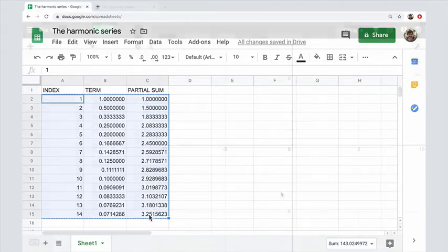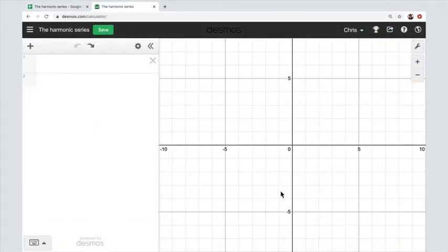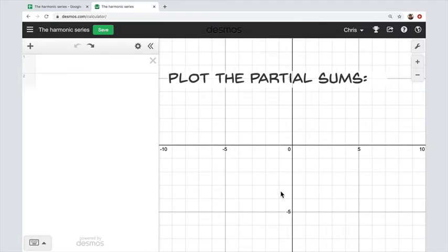So you copy that data and now you head over to Desmos. And all you do to plot the partial sums is paste the data into a cell. Couldn't be easier.